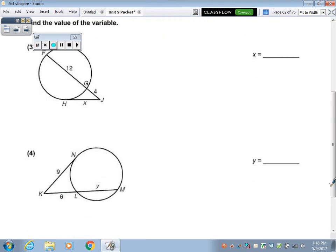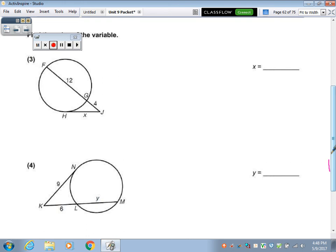Alright, two more, just to get the idea of it. So look at this number 3. You've got the whole, which is 16. So whole times outside. And on the second part of it, the whole piece is X. So you've got whole times outside. Alright, so X times X, X squared, square root both sides, so you get X equals 8. It's still whole times outside, whole times outside, but the whole and the outside are the same, so you're multiplying by itself, and that's what it means to square it.